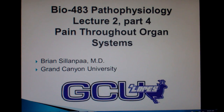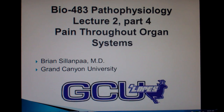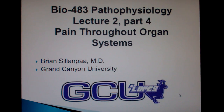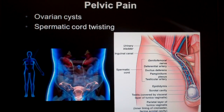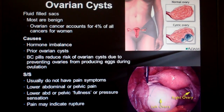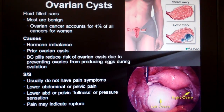Welcome back to pathophysiology lecture 2, part 4 - pain throughout the organ systems. Although we're still in the abdomen, we're kind of switching into the pelvis here. We'll talk about ovarian cysts and spermatic cord twisting. First off, let's go with ovarian cysts.